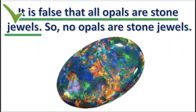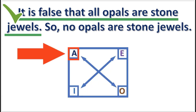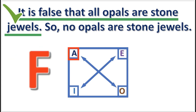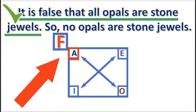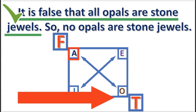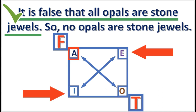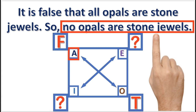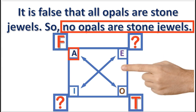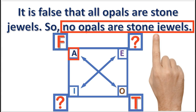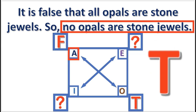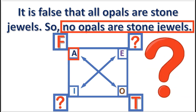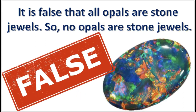Here's another inference. As usual, we assume that the premise is true, and the premise asserts that an A proposition is false. So we enter an F above the A in the square. Next, since A is false, O is true. E and I have undetermined truth value, as no other inferences are possible. Finally, we check the conclusion. The conclusion claims that the E proposition is true. But when we look at the square, we see that the E proposition has undetermined truth value. So the inference is invalid.